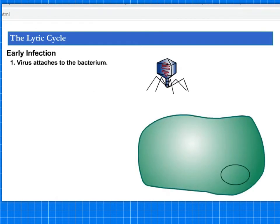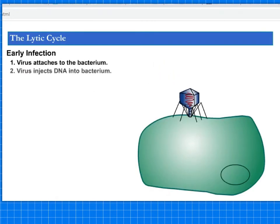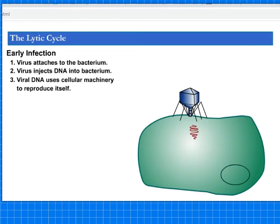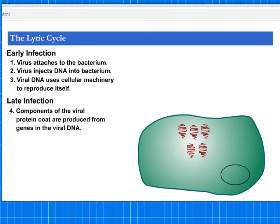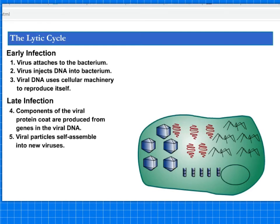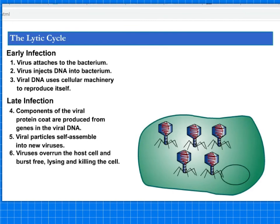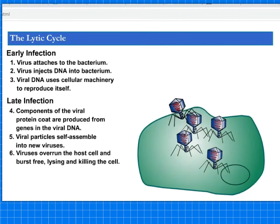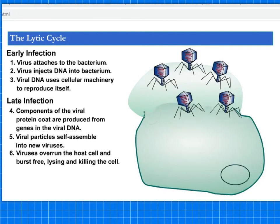First of all, you get early infection: the virus attaches to the bacterium and then injects its DNA. The viral DNA then uses the cellular machinery to reproduce itself. The components of the viral protein coat are produced from genes in the viral DNA, and then the viral particles self-assemble into new viruses. The viruses then overrun the host cell and burst free, causing lysis — or lysing — and killing the cell.